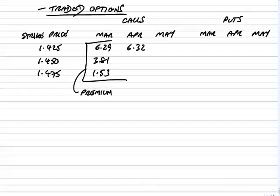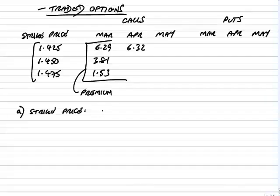Using example two, just going through and explaining what the rows and columns mean. First of all, what is the strike price? The strike price is the exercise rate. Here we've got the choice to buy an option to convert at 1.425, 1.45, or 1.475. With traded options, there are only limited choices available, and the premiums depend on which one we go for. The strike price is the exchange rate that we have the option to use — the option exchange rate.